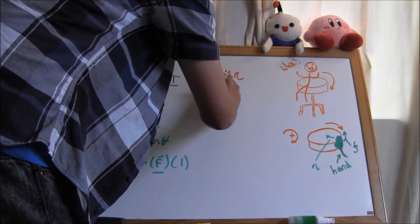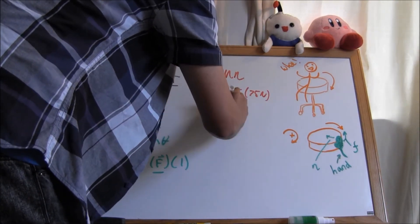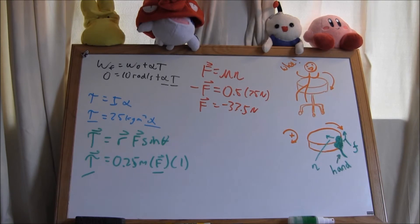We can find the force of friction by multiplying the normal force by the coefficient of friction. Since friction is a counterclockwise torque, the force of friction will be negative 37.5 newtons.